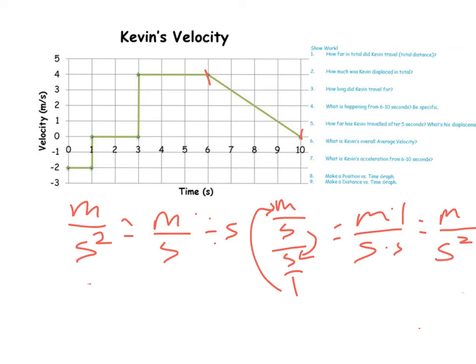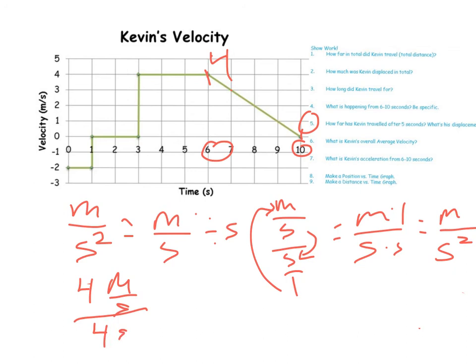We need to divide speed by time, but we have all these different speeds — four, three, two, one — and different times. When you think about acceleration you're thinking about something speeding up, but you're not realizing that occurs over a period of time. So what you need is your change in speed divided by your change in time. We started at four and ended at zero over four seconds: four meters per second over four seconds equals one meter per second squared. That's our acceleration.